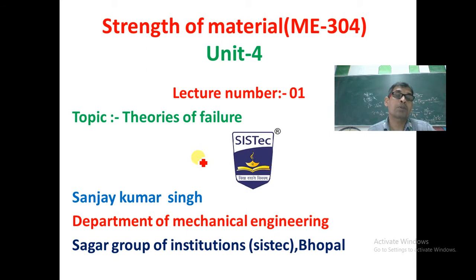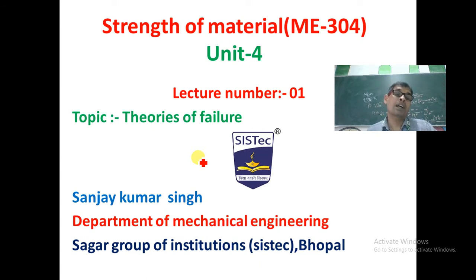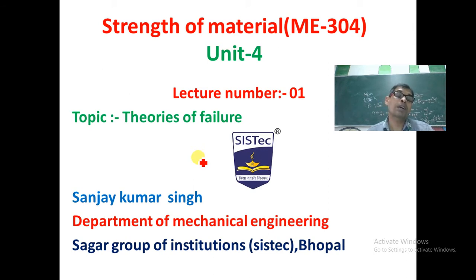Ductile failure is seen mainly in ductile materials like mild steel, aluminum, copper, etc. The other type is brittle failure — it means that before giving any clear warning or information, if the metal fails, or if the metal fails without any decrease in cross-section area, then we call it brittle failure, like cast iron, glass. The deformation is very small and negligible, which we cannot observe with the naked eye, and then suddenly the material fails.